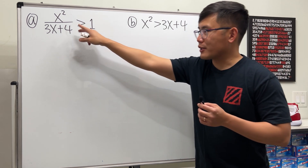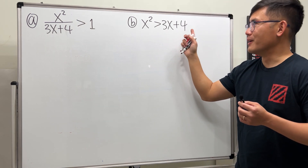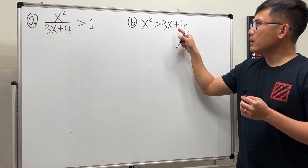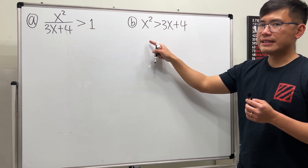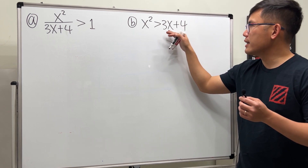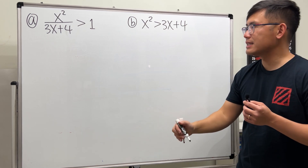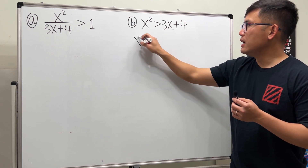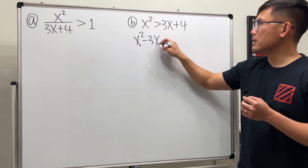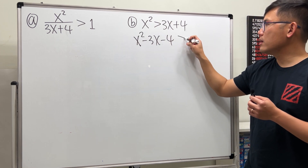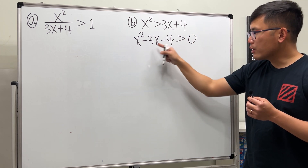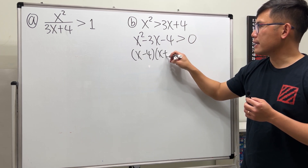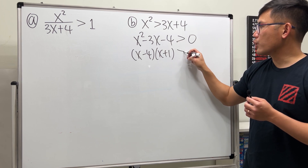Let's do the simpler one first — no fractions. Move everything to one side: do not divide by (3x + 4). Instead, we get x² - 3x - 4 > 0. Factor it: we get (x - 4)(x + 1) > 0.